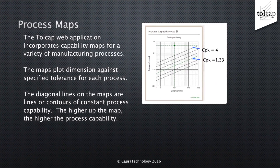Tollcap incorporates capability maps for a variety of manufacturing processes. The maps plot dimension against specified tolerance for each process. The diagonal lines on the maps are lines, or sometimes contours, of constant process capability. The higher up the map, the higher the process capability.